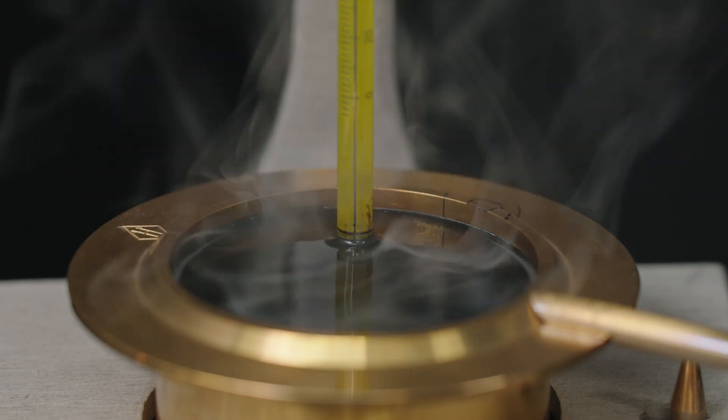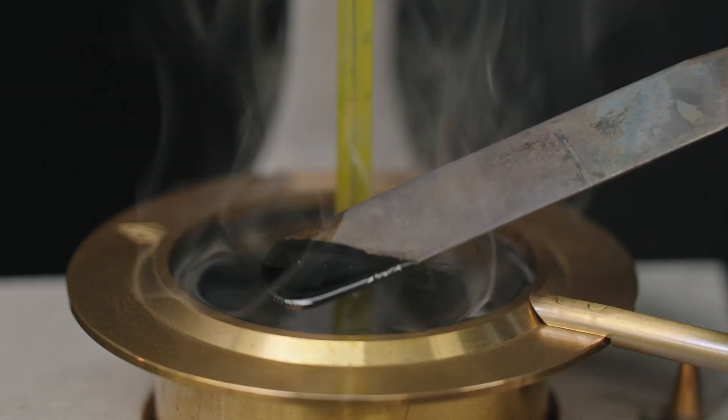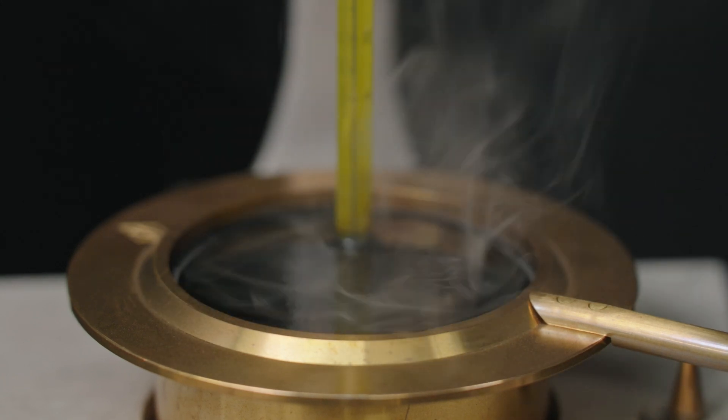If a film forms on the surface of the sample, gently move it aside with a spatula, paper clip, or other suitable implement prior to the next pass of the test flame.